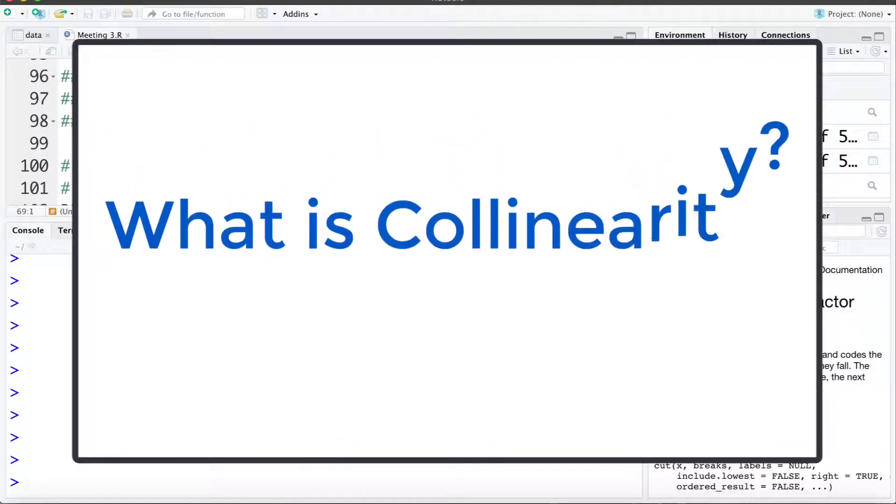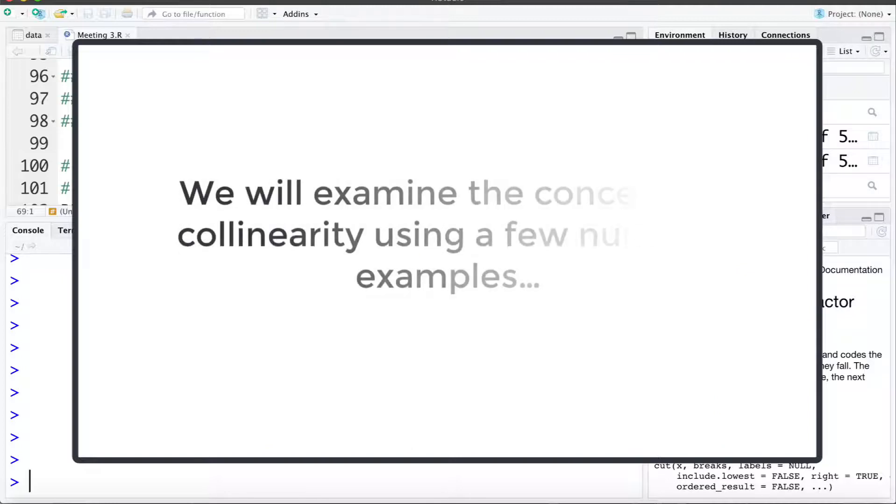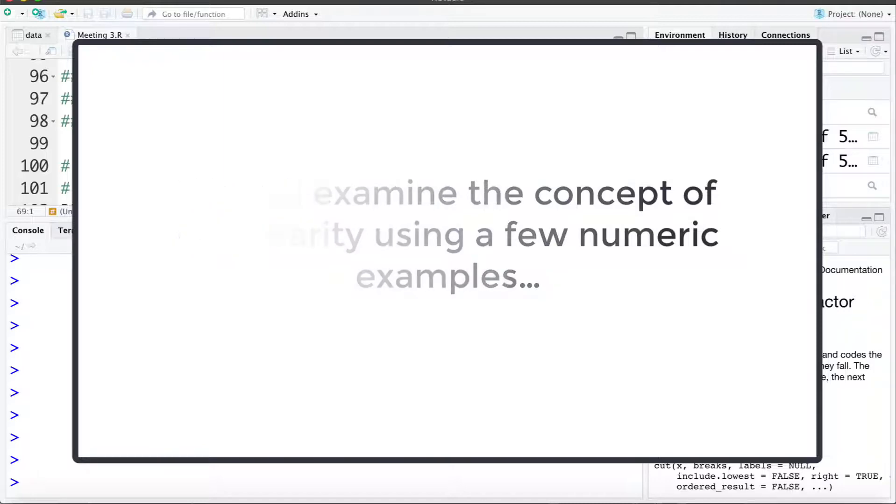In this video we're going to explore the idea of collinearity in a numeric example. We've already discussed the concept of collinearity conceptually in a separate video and now let's explore how we can see collinearity showing up in a data set when we explore it in R.